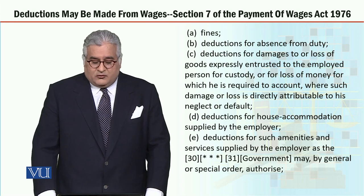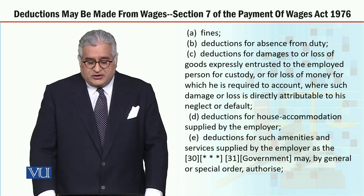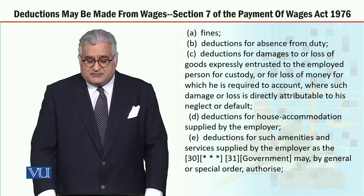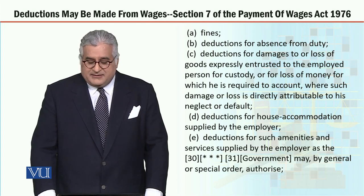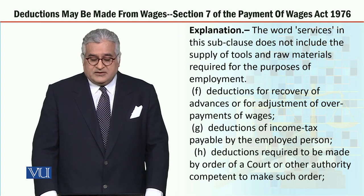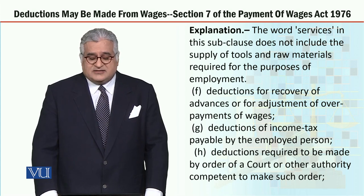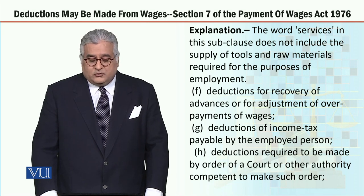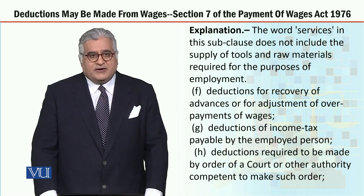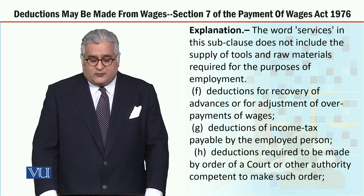The next kind of deduction is deductions for house accommodation supplied by the employer. The next deduction is for such amenities and services supplied by the employer as the government may by general or special order authorize. The law provides an explanation: the word 'services' in this sub-clause does not include the supply of tools and raw materials required for the purposes of employment. The next kind of deduction is deductions for recovery of advances or for adjustment of overpayment of wages.